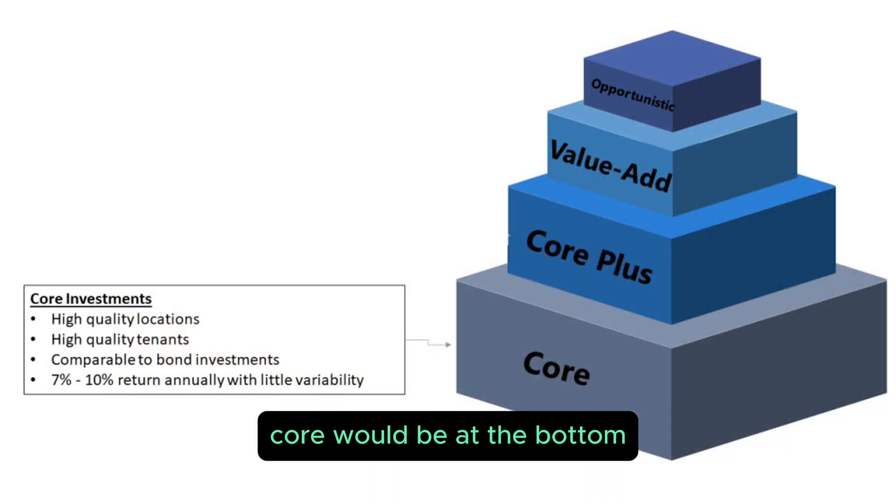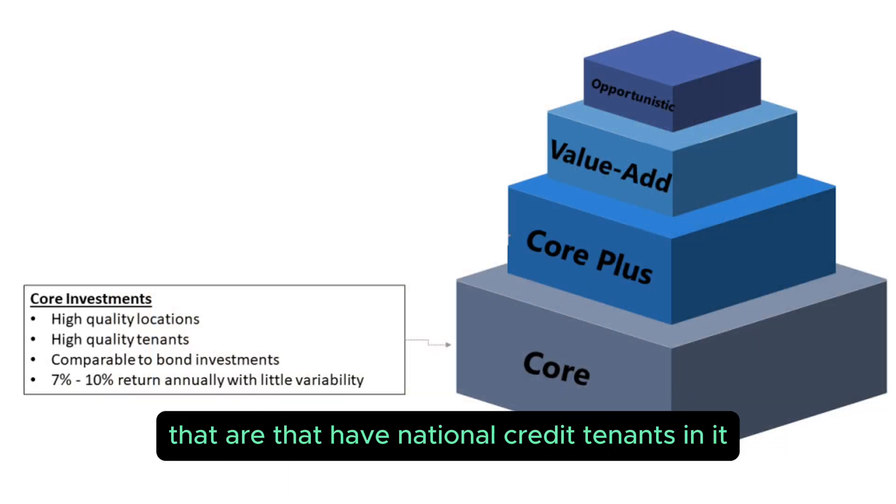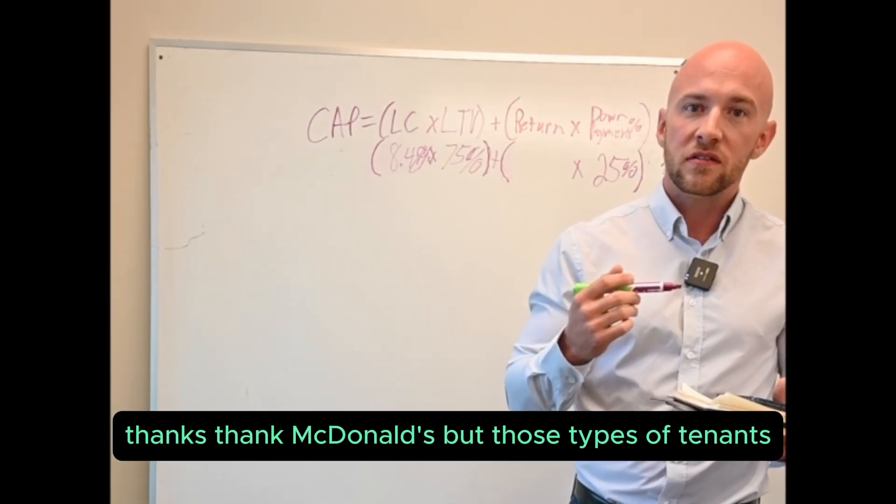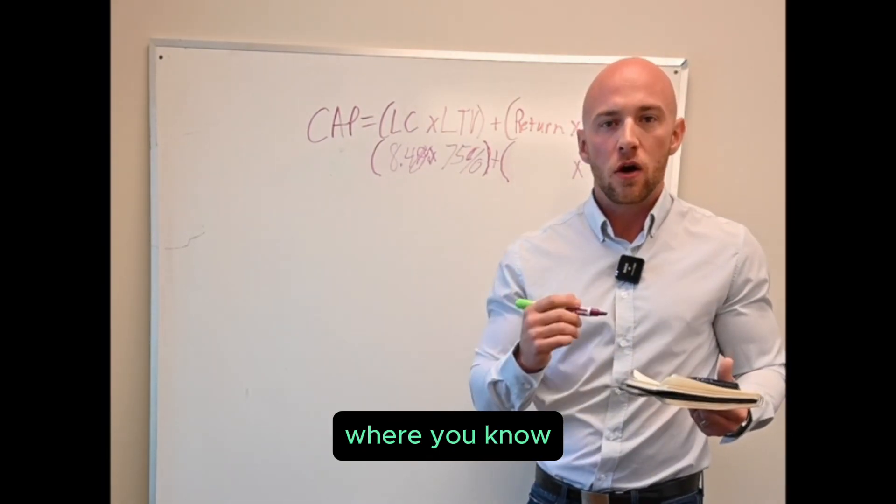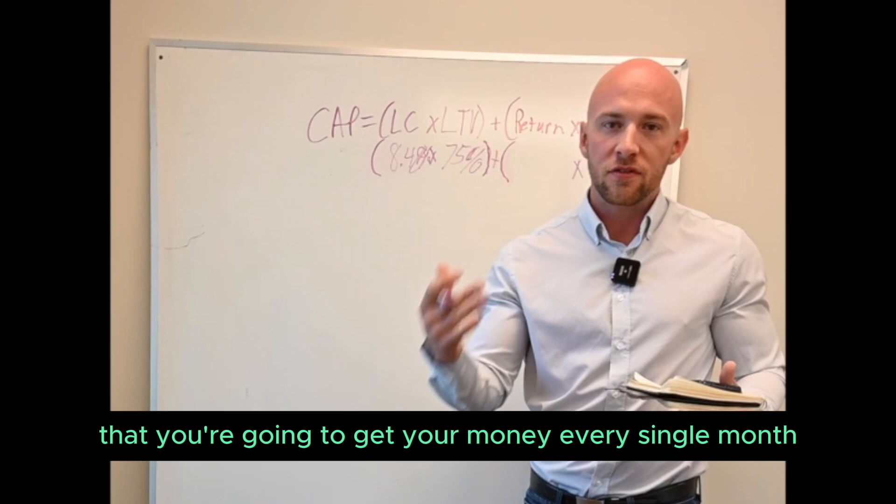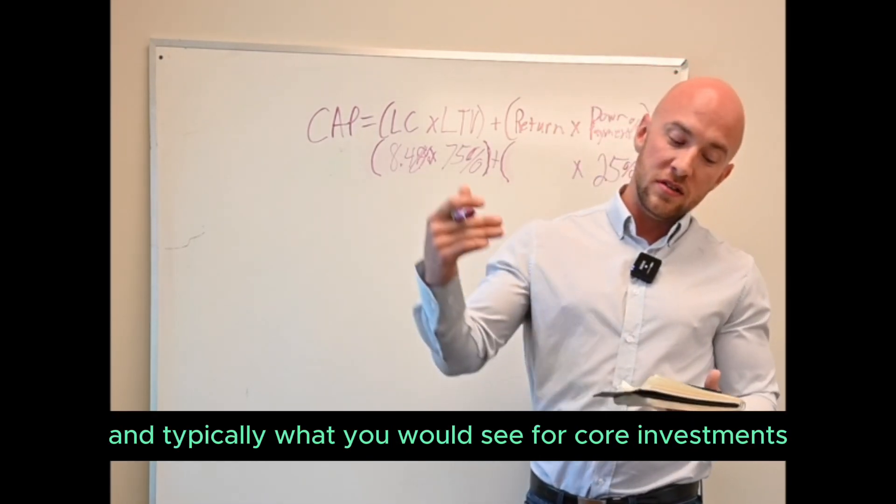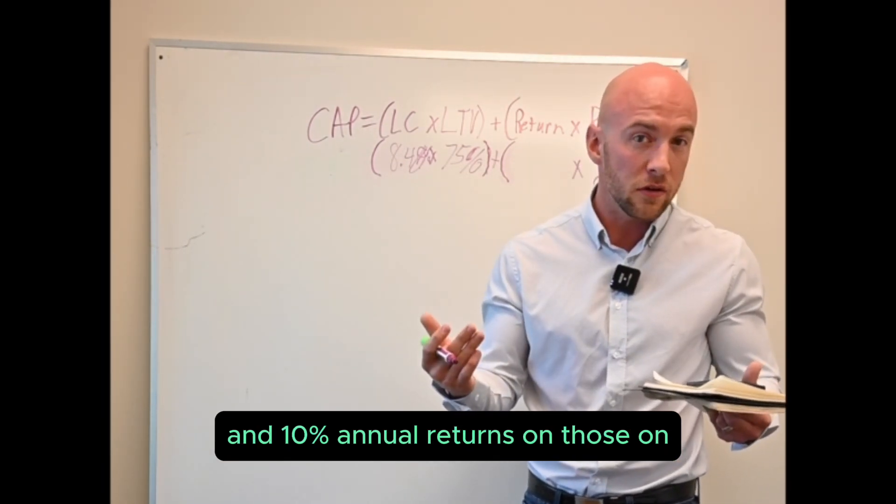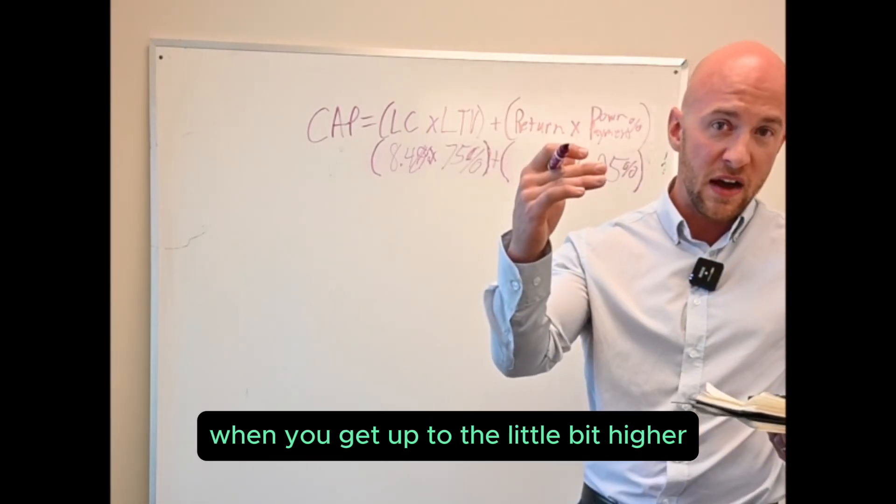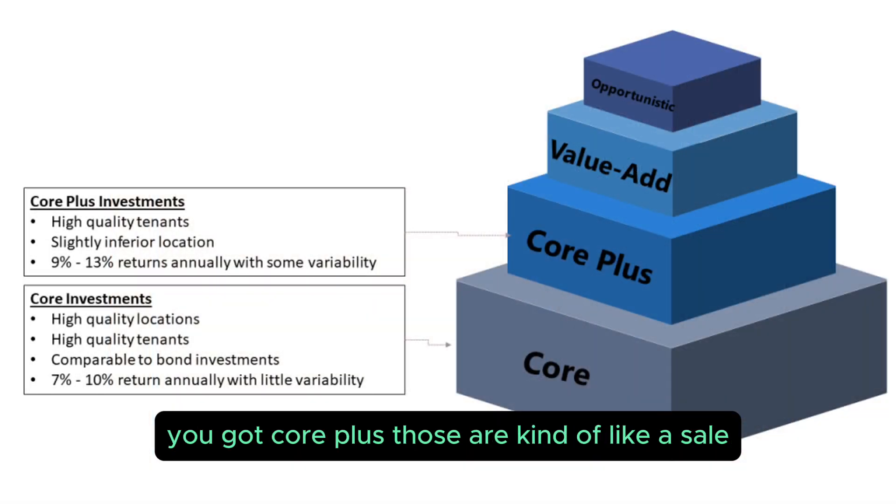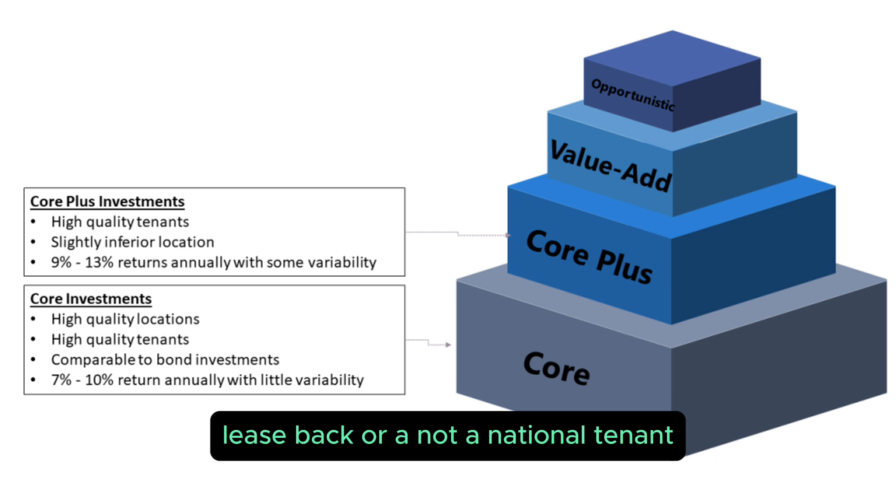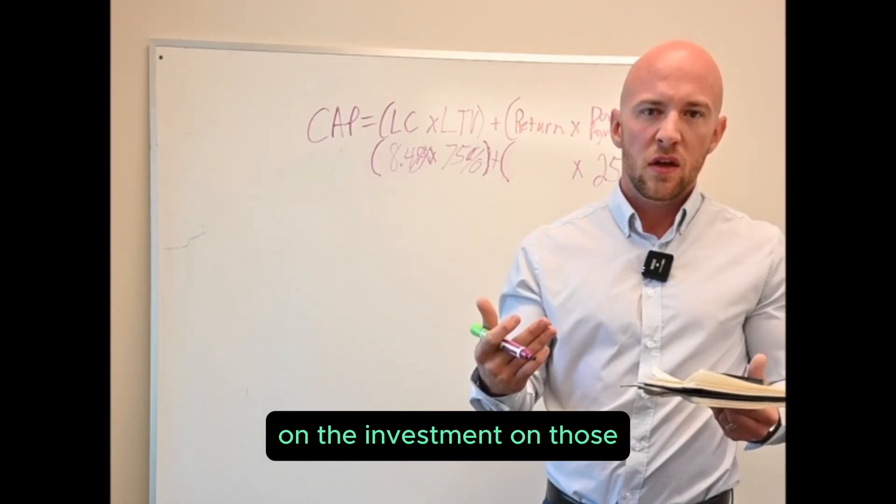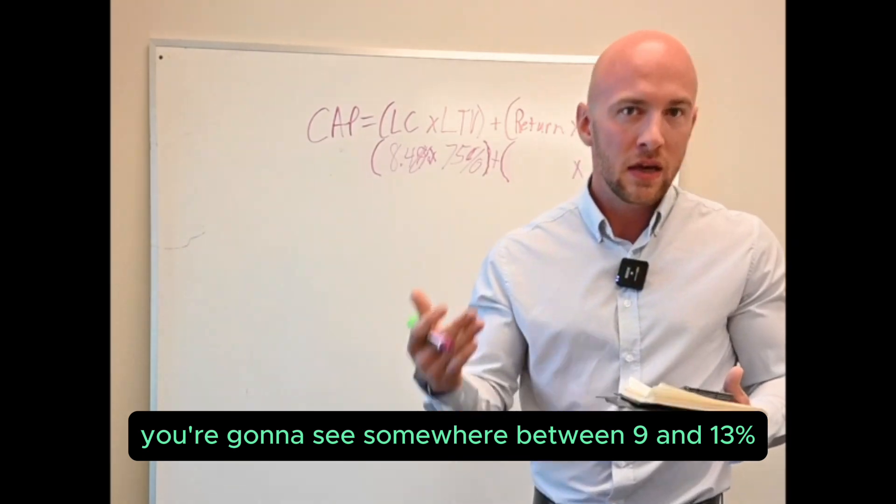Let's describe some of these. Core would be at the bottom. Think about buildings that are standalone that have national credit tenants in it with big balance sheets. Think Starbucks, think McDonald's, those types of tenants where you know that you're going to get your money every single month, they're not going to stop paying. So you're going to take a smaller return, and typically what you would see for core investments, you're going to see somewhere between seven and ten percent annual returns on your money on those types of investments. When you get up to a little bit higher you got core plus. Those are kind of like a sale leaseback or a not a national tenant but a long-term lease, someone you're going to take a little bit more risk on the investment. On those you're going to see somewhere between nine and thirteen percent.